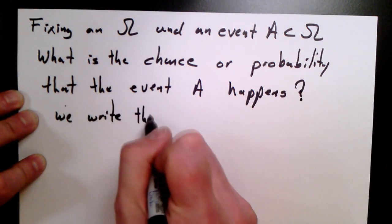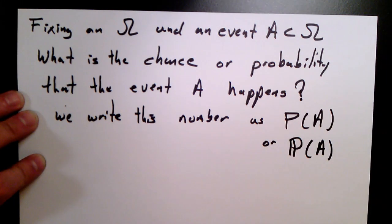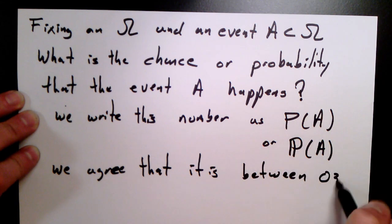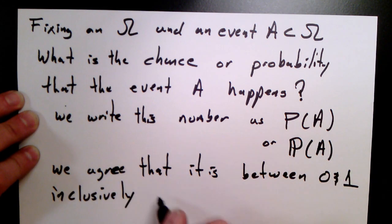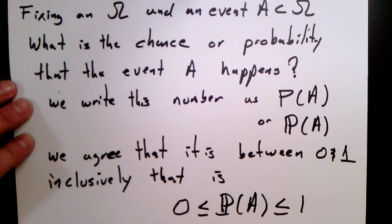Now, we'll write this number, this numerical value, as P of A, or sometimes as bold P of A. And we'll agree that this is always going to be a number between zero and one. So, the probability of something happening could be point five or point seven or one-fifth or three-fourths. But it will always be a number between zero and one.